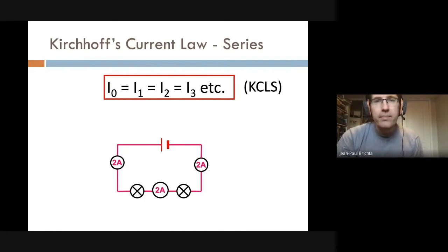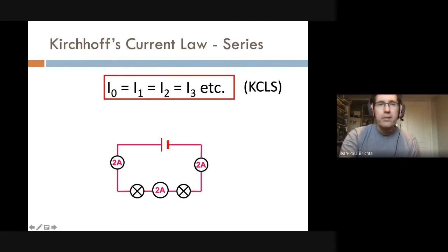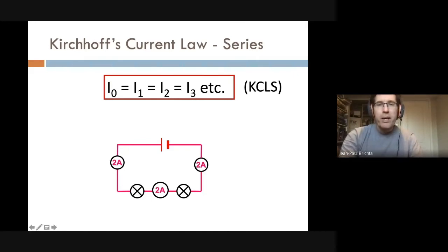This gives us Kirchhoff's current law for series circuits. It states that the current I₀ in the circuit equals the current measured after any of the elements. In our example, we measure two amps right after the battery; after the first lamp we still have two amps; after the second lamp we still have two amps. So I₀ = I₁ = I₂ — the current is the same everywhere.